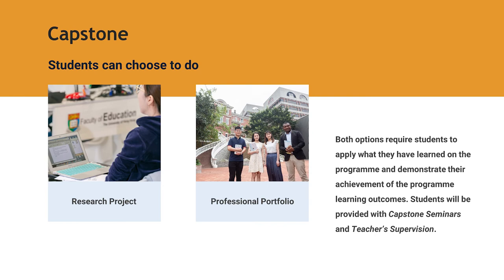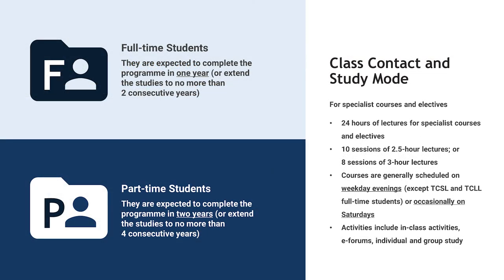In terms of study modes, we have two types. Full-time students are expected to complete the program in one year, with a possible extension of up to two consecutive years. Part-time students are expected to complete the program in two years, with a possible extension of up to four consecutive years. In terms of class contact, there are 24 hours of lectures for specialist courses and electives — either 10 sessions of 2.5-hour lectures or 8 sessions of 3-hour lectures. Courses are generally scheduled on weekday evenings, except for TCSL and TCLL full-time students, or occasionally on Saturdays. Activities include in-class activities, e-forums, and individual and group study and work.